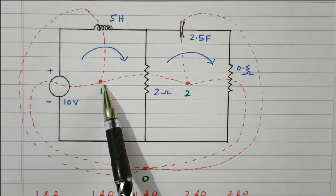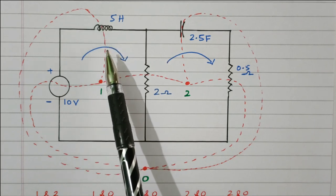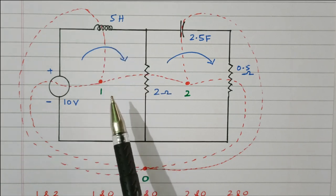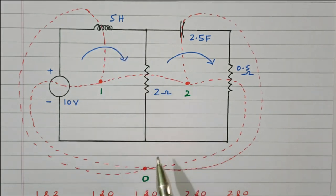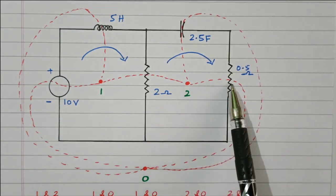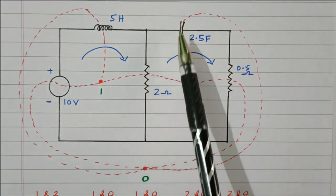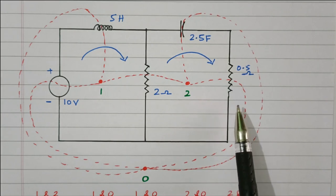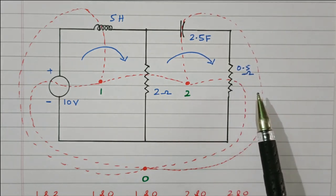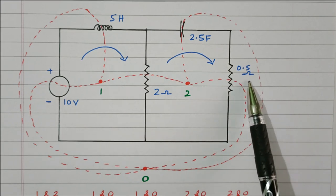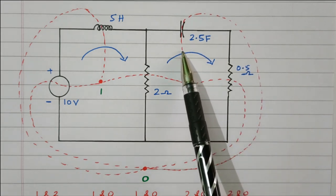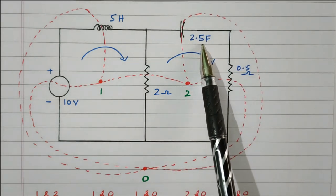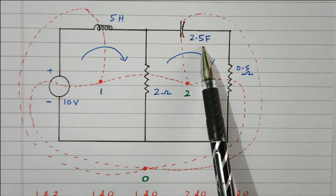Draw the dotted line between 1 and 0 through the 5 Henry inductance. This 5 Henry inductance will be converted into a 5 Farad capacitor. Now we will connect the dotted line between 2 and 0. Here two elements are available — one is a resistor and another one is a capacitor. The 0.5 ohm resistor will be converted into 0.5 mho conductance. Draw one more dotted line through the capacitor between 2 and 0. This 2.5 Farad capacitor will be converted into a 2.5 Henry inductance.